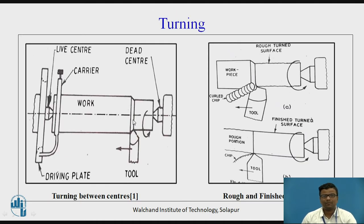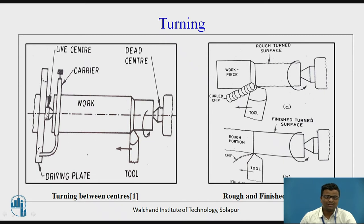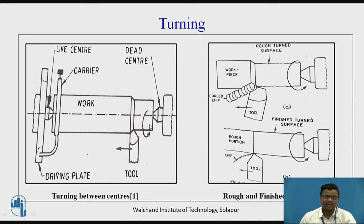Now we will see in detail the turning operation. Turning and facing are the basic operations. Lathe operations involve removing metal during the actual cutting operation. In the turning operation — turning between centers — this is the live center and this is a dead center, and we have a driving plate here. The job is supported with the help of the live center, the driving plate, and the lathe carrier attached to the tail of the lathe carrier or lathe dog.